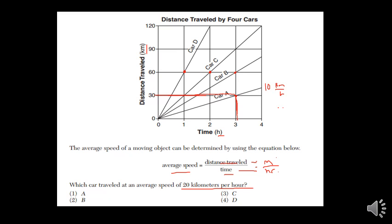That's 10 kilometers per hour for each hour. Add them up. There's your 30 kilometers in 3 hours.